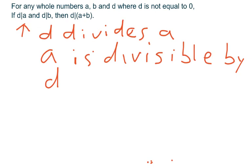And that's another way to say that a is divisible by d, which means that if you take the number a and divide it by the number d, there will be no remainder. Got that backwards, sorry.